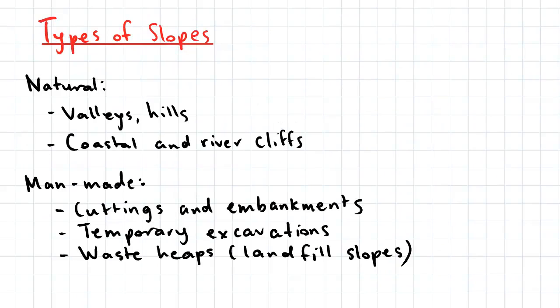There are different types of slopes, both natural and man-made. Natural slopes can include valleys, hills, cliffs, and man-made slopes can include cuttings, temporary excavations, and waste heaps.